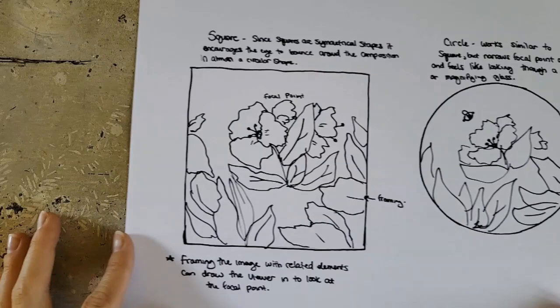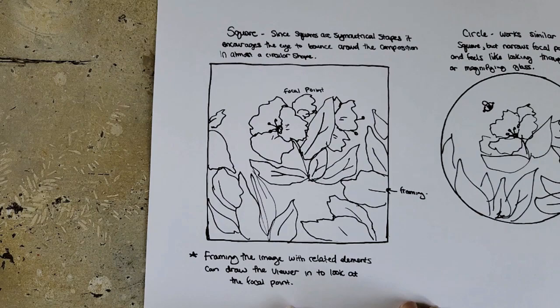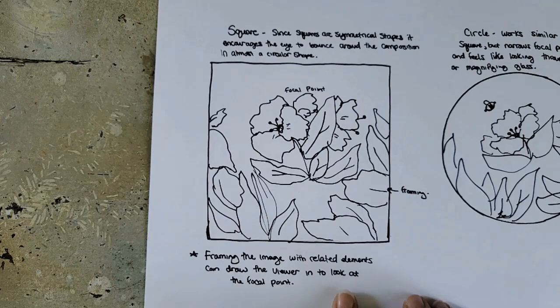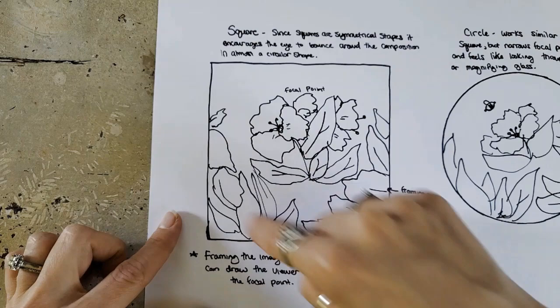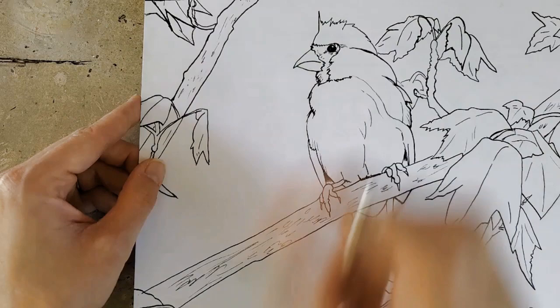Something else I wanted to mention is framing the image. What I mean by framing isn't necessarily the frame after, but using elements within the piece to frame your focal point. You can take related elements and draw the viewer in by placing them around the frame. Here's an example — this isn't a square composition, but the leaves help frame the cardinal and draw the eye to it, creating a nice dynamic composition.